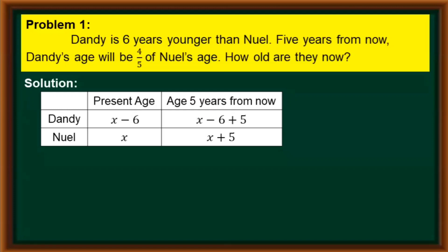After completing the table, we create our equation. We focus on their ages five years from now, because it is stated in our problem that after five years, Dandy's age will be four-fifths of Noel's age. So, Dandy's age, x minus six plus five, equals four-fifths of Noel's age, x plus five. In equation form: x minus six plus five equals four-fifths of x plus five.